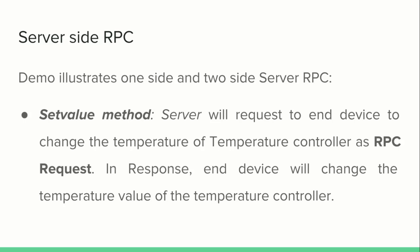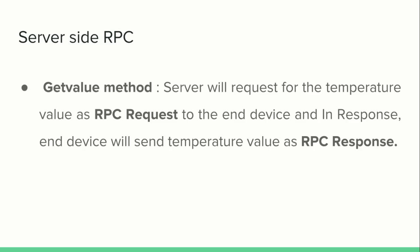Next we will have a look at a demo illustrating one-way and two-way server-side RPC. In this demo, I am using two methods: 'setValue' and 'getValue'. The server will request the end device to change the temperature of the temperature controller as an RPC request, and in response the end device will change the temperature value. In the 'getValue' method, the server will request the temperature as an RPC request, and in response the end device will send the temperature value as an RPC response.